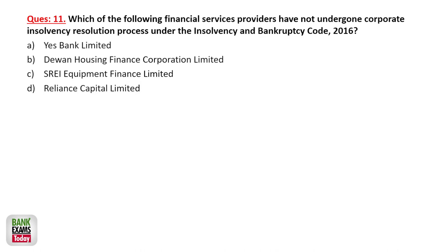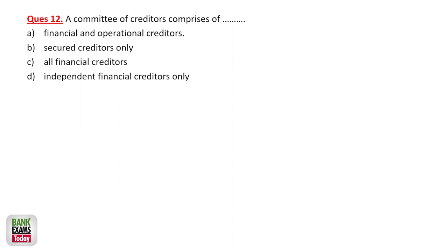Which of the following financial service providers have not undergone Corporate Insolvency Resolution Process? Banks have not gone under the IBC. Dewan Housing, SREI, and Reliance Capital have all gone under the insolvency resolution process — CIRP. Banks have never gone through that. A committee of creditors comprises all financial creditors. All financial creditors are part of the committee of creditors, and their voting rights are in proportion to the value of the debt.